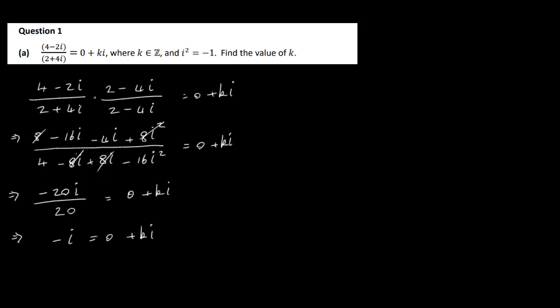That equals 0 plus ki, which is actually 0 minus i. So the coefficient of i on both sides must be equal, meaning minus 1 is equal to k. So k equals minus 1 — that's our answer.